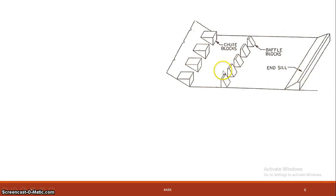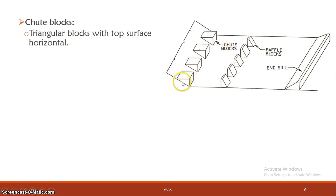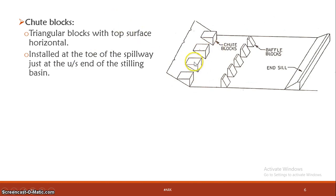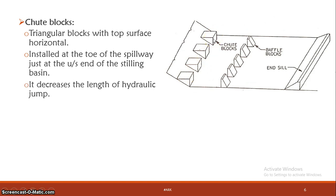The first accessory is the chute block. This is a triangular-shaped block with a horizontal top surface. Its location is at the upstream entrance of the stilling basin, at the base of the spillway. The function of the chute block is to reduce the length of the hydraulic jump, so the required stilling basin length is reduced.